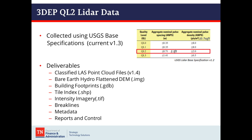Here's some information about the QL2 LiDAR data that's delivered to us. It is collected using the USGS base specifications, which is a lengthy document that has specifications this data must meet before it is delivered. Our data is quality level two, or QL2, which means we have two points per square meter or better and a nominal pulse spacing of 2.3 feet or less.